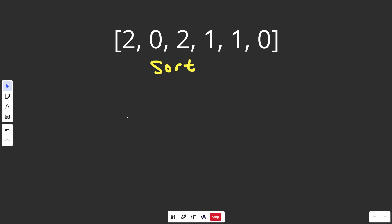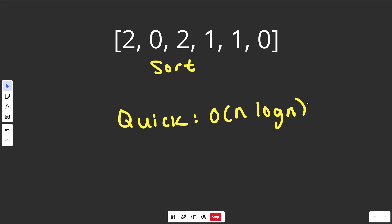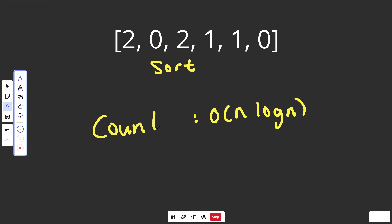There are faster algorithms, like quick sort or merge sort, which on average are O(n log n) — that is tremendously faster than n squared. However, there's one type of sort which in this circumstance is much better, which is called a counting sort.